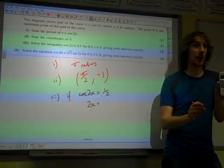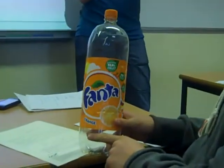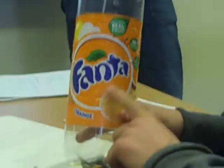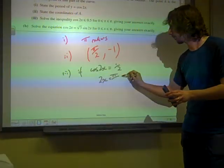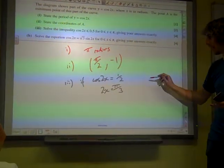If you change your calculator to radians mode, and do inverse cos of a half, then your calculator says 1 third of π on the screen. So you've got that straight away. We need to know the other value that that would take.